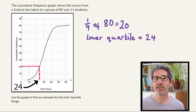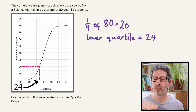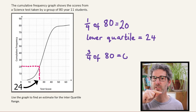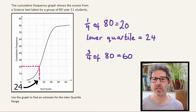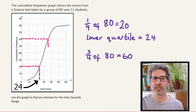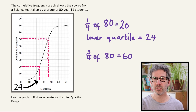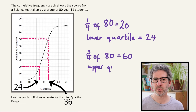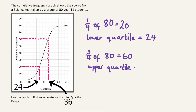To find the upper quartile we need to go three quarters of the way through our data set. We've got 80 values, and three quarters of 80 is 60. So we go up to 60 on our cumulative frequency axis, take a line across until we hit the curve, and read down to the test scores axis. You can see that corresponds to 36.